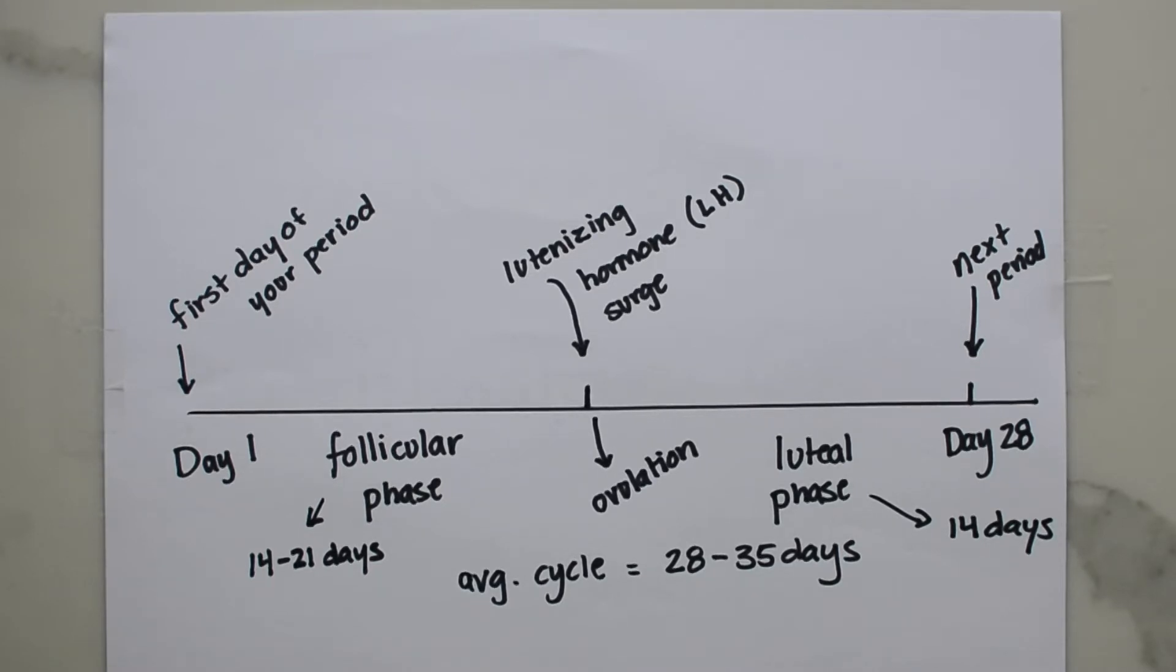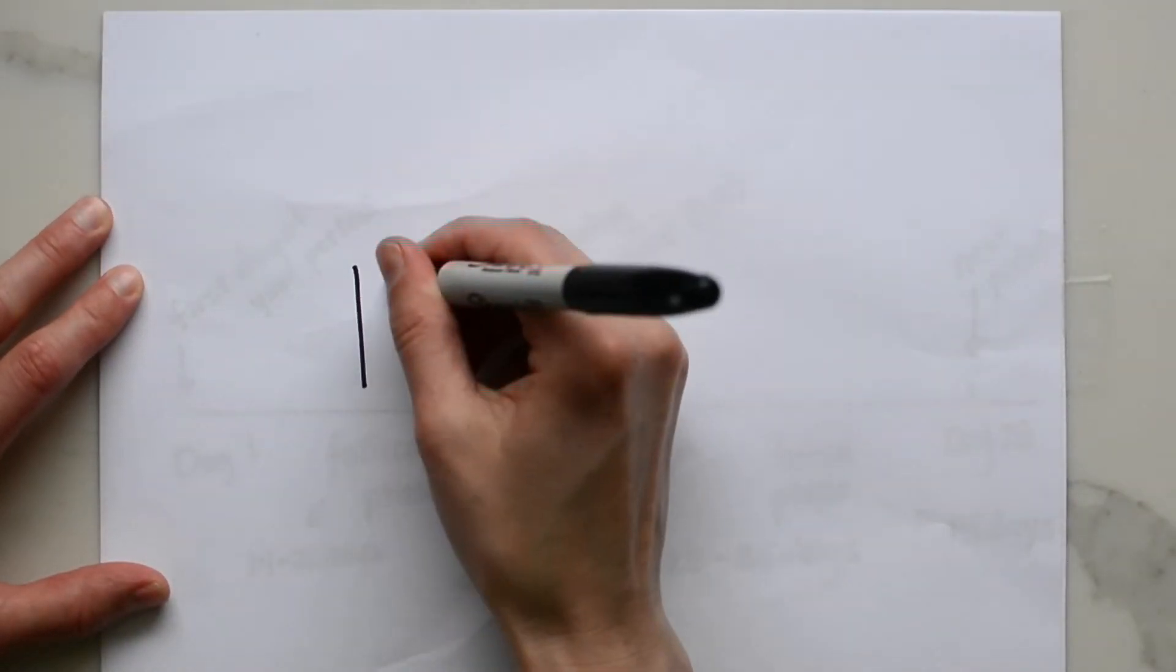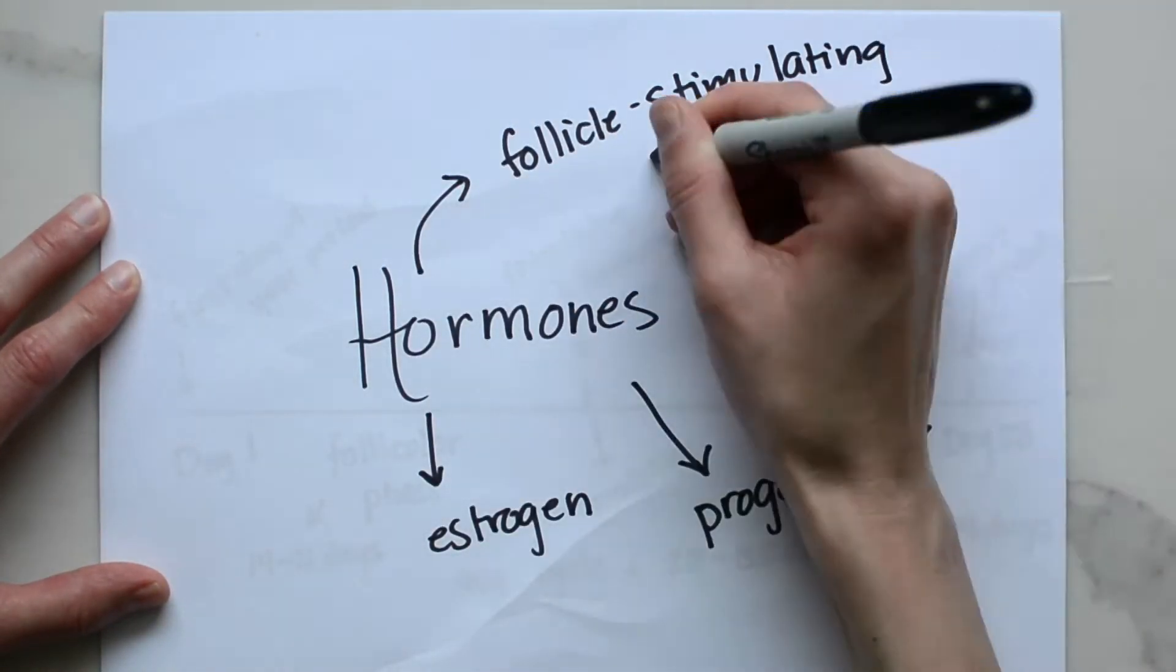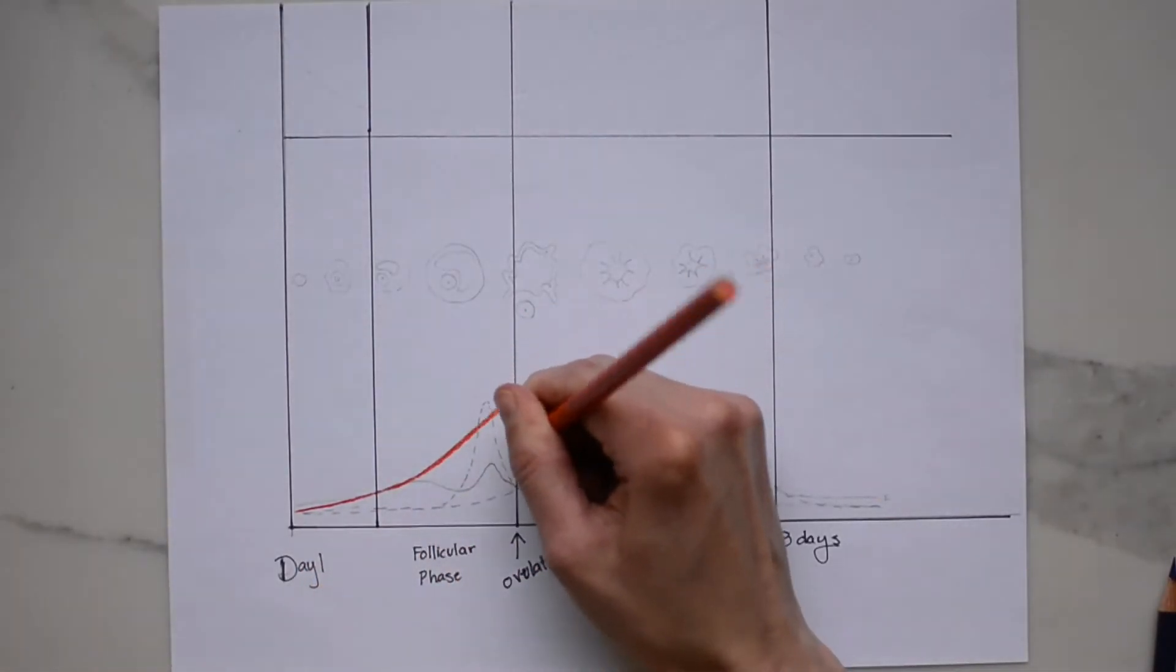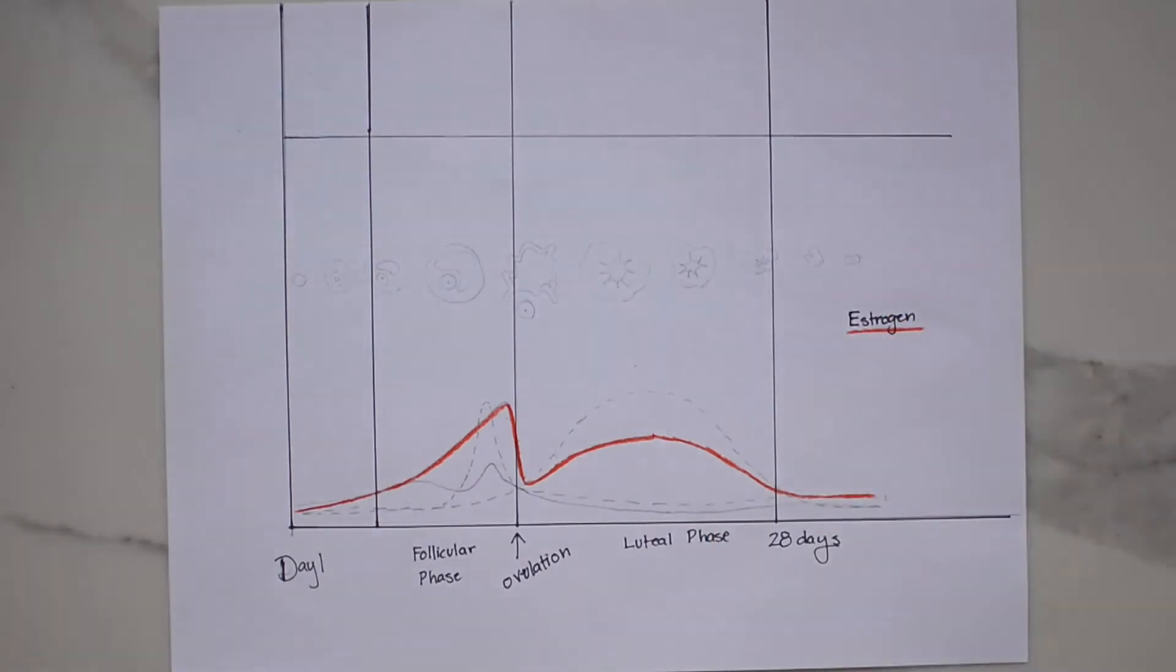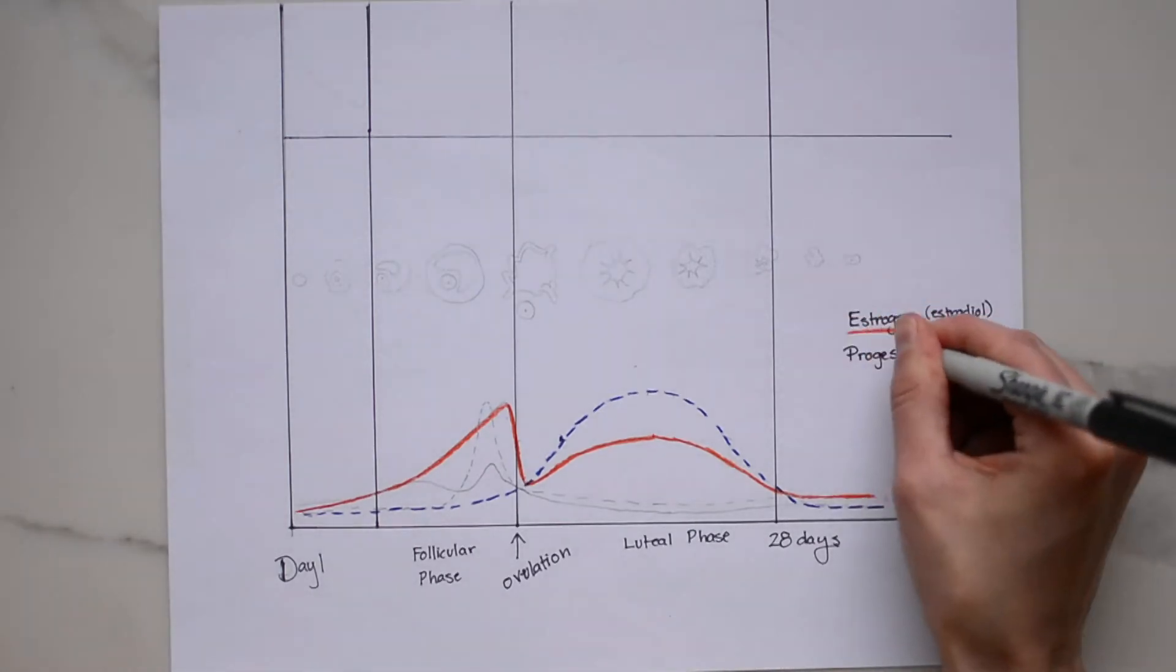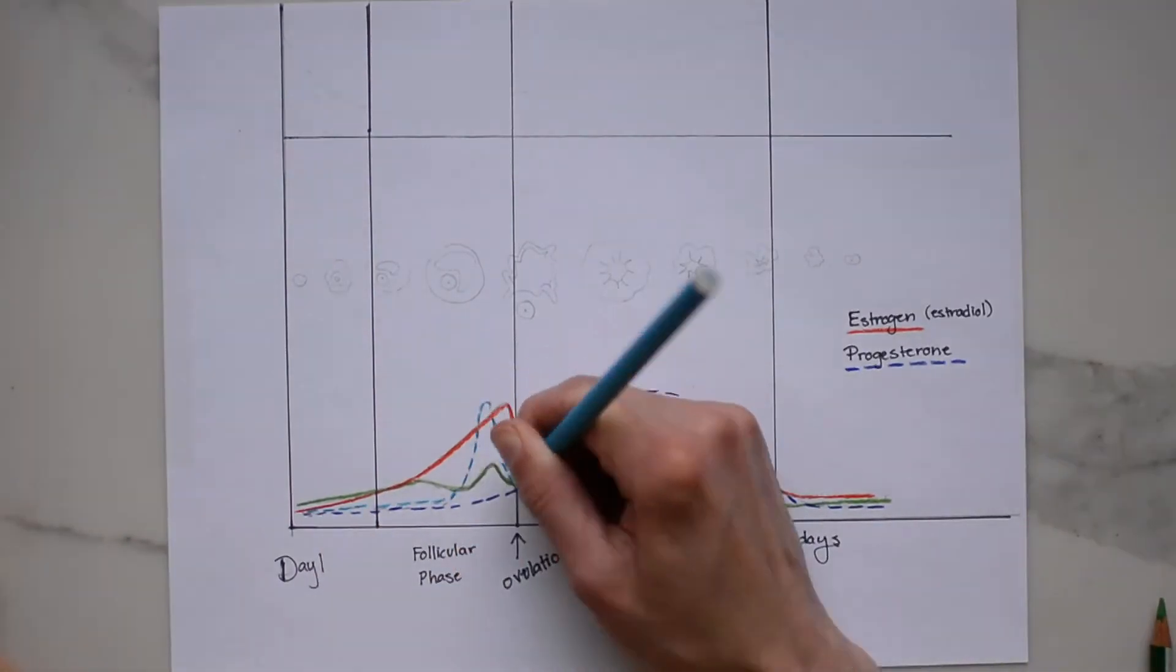To understand the menstrual cycle we really need to understand the roles of the various hormones involved and I'm going to illustrate how they change over the course of the menstrual cycle, how they work together, and their actions. So to start we have estrogen and to be specific this chart is representing estradiol. We have three different types of estrogen and estradiol is the strongest of the estrogens. We have progesterone, we have follicle stimulating hormone, and luteinizing hormone and those two are known as FSH and LH.